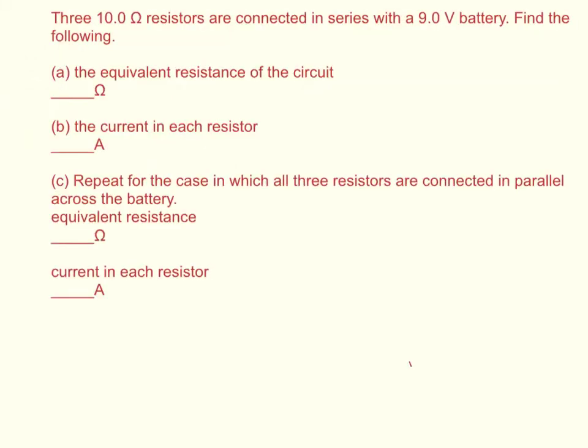The problem states: three 10 ohm resistors are connected in series with a 9-volt battery. Find the following: the equivalent resistance and the current running through each. Then repeat for the case where all three resistors are connected in parallel across the battery.